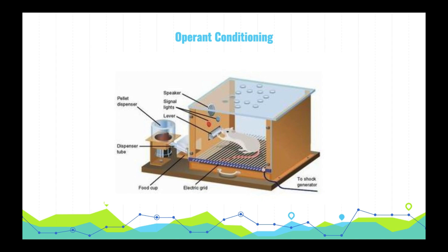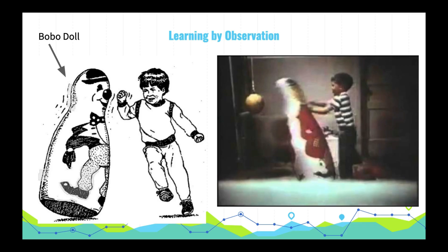Researchers have also observed that varying the reinforcement schedules — in other words, how often the rat gets food from pressing the bar — has a role to play in conditioning. For example, if the bar only yields food one half of the time, the rat will learn much slower.